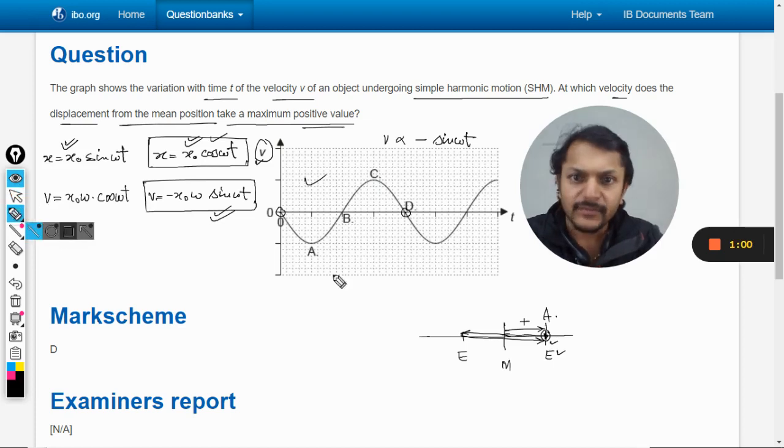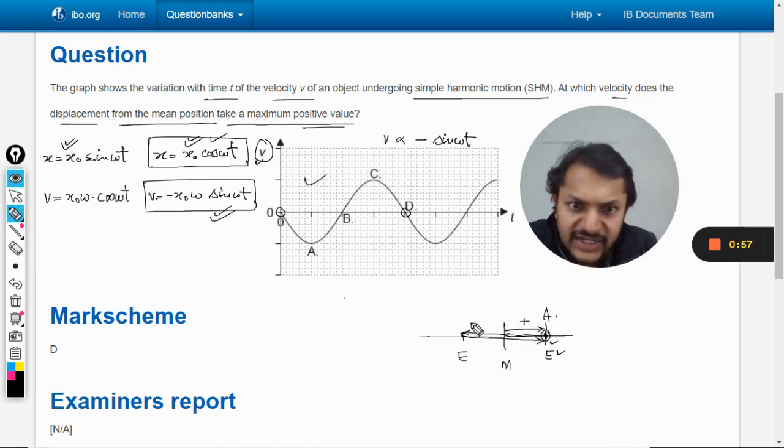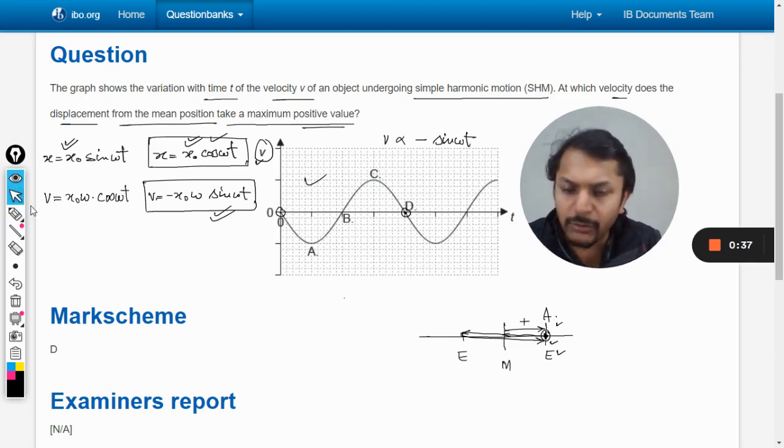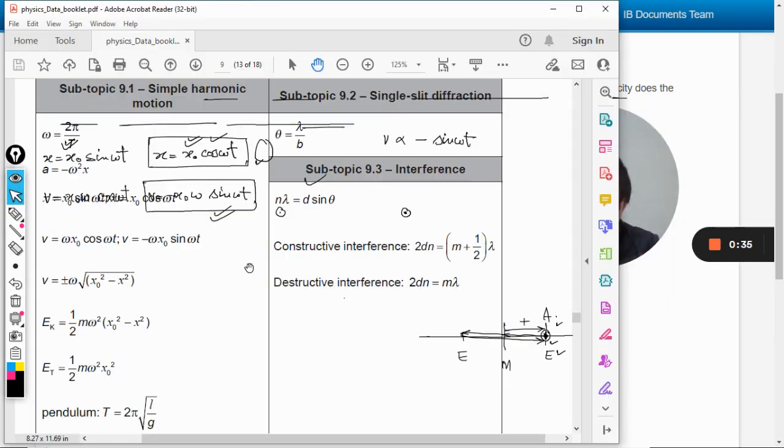I repeat what we just did - this was the point we were looking for, and this point is actually point D, when the body will again start moving backward with maximum positive displacement. This is how we do it.